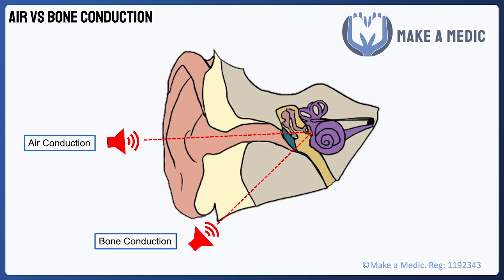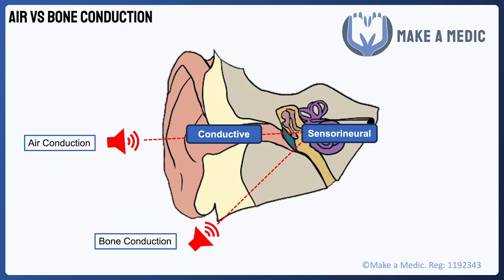Hearing via bone conduction only requires the inner ear structures and nervous system to be working. Therefore, sensorineural hearing loss will impair hearing via both the air conduction and bone conduction pathways, because the sensory receptors and nervous system are involved in both pathways. Meanwhile, conductive hearing loss will only affect hearing via the air conduction pathway, because the bone conduction pathway will bypass any of these pathologies.